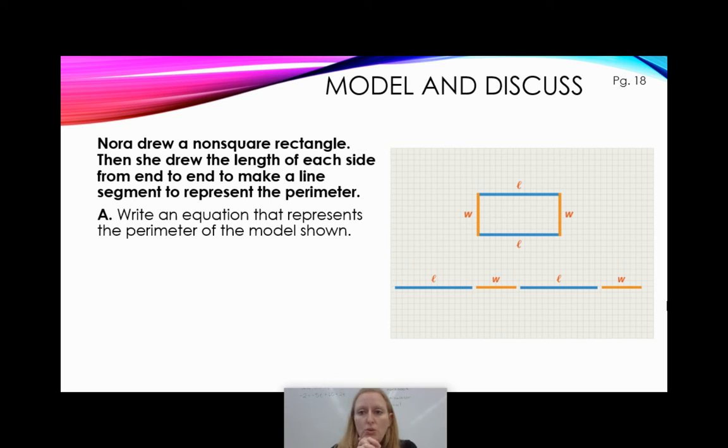So I would like you to write an equation that represents the perimeter of the model shown. Go ahead, hit pause, write it down, hit play to check your work. So I kept it simple. I was like, okay, so my perimeter, I have to write an equation. So my perimeter, I'll use P for perimeter, equals, well, I've got my length plus my width plus another length plus my width. Awesome. Good job. Hopefully, you had something pretty similar, just length plus width plus length plus width.